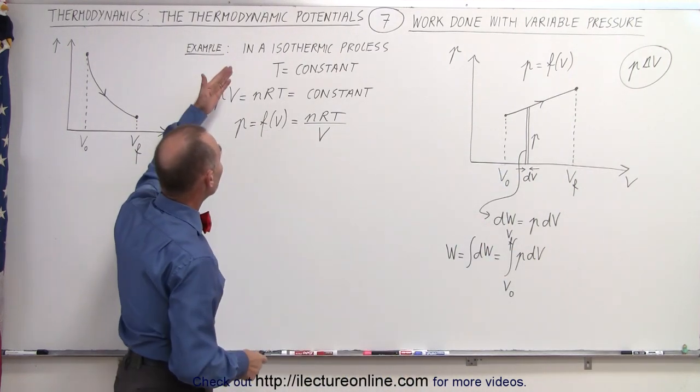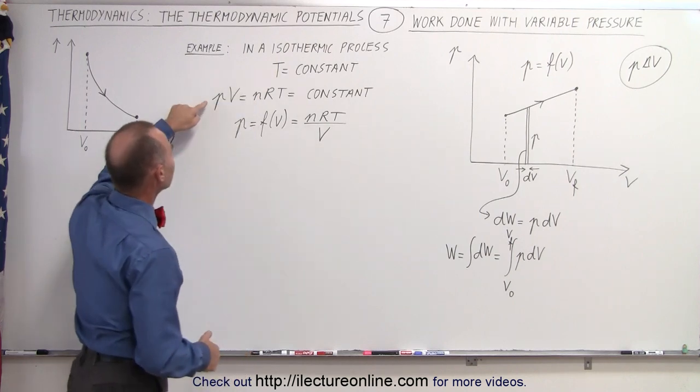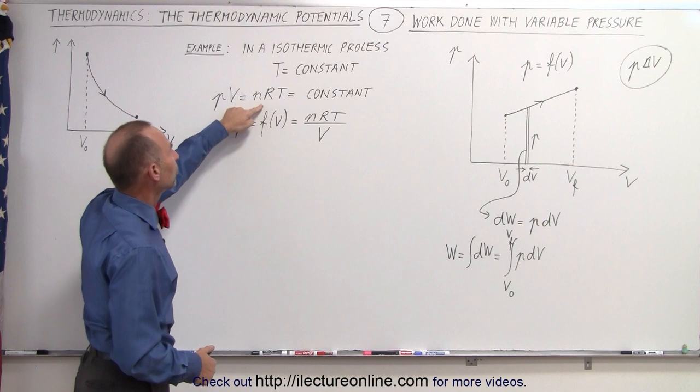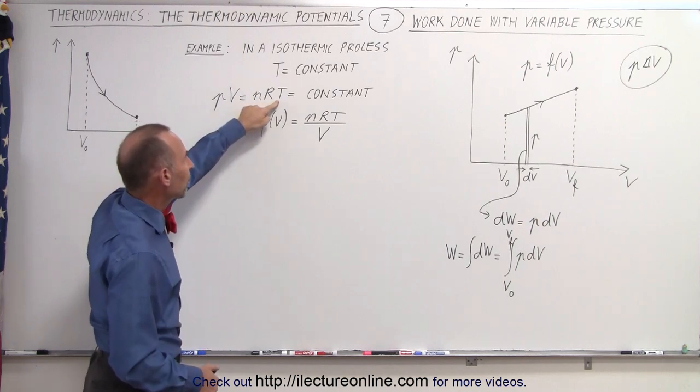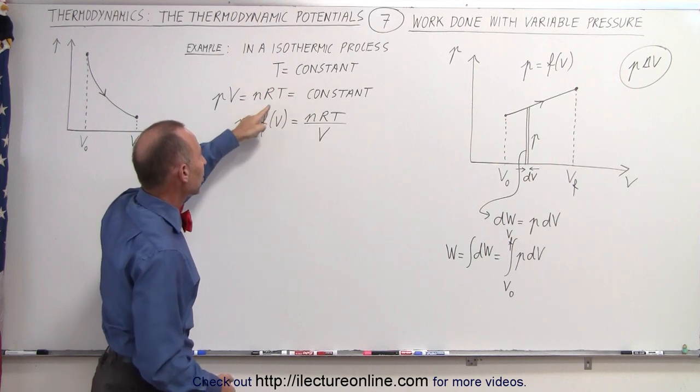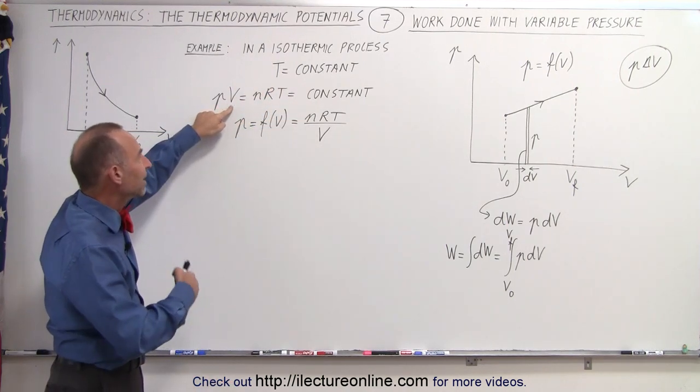As an example, let's say we use an isothermic process, where the temperature remains constant, using the ideal gas equation where PV equals nRT. Since n is the number of moles, R is the gas constant, T is the temperature, and since temperature is constant, nRT is the constant, so the product of the pressure times the volume is a constant.